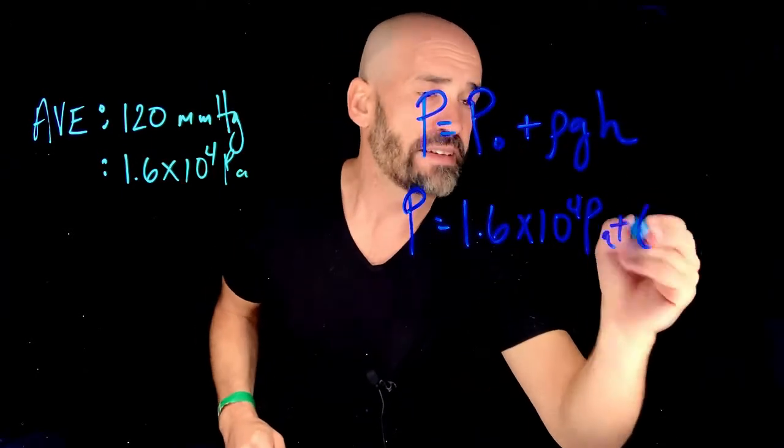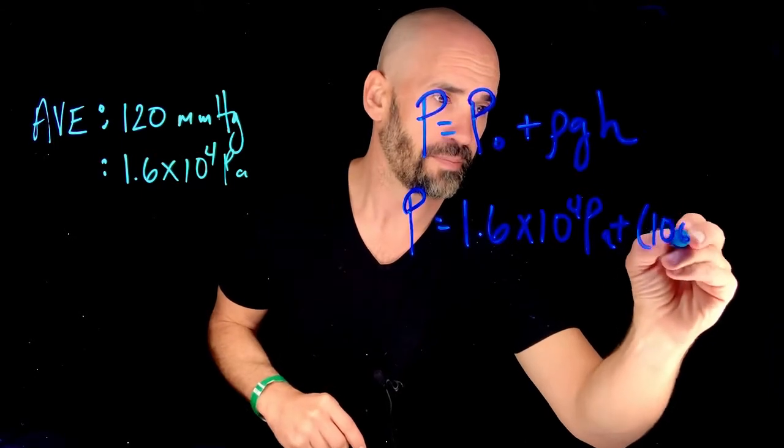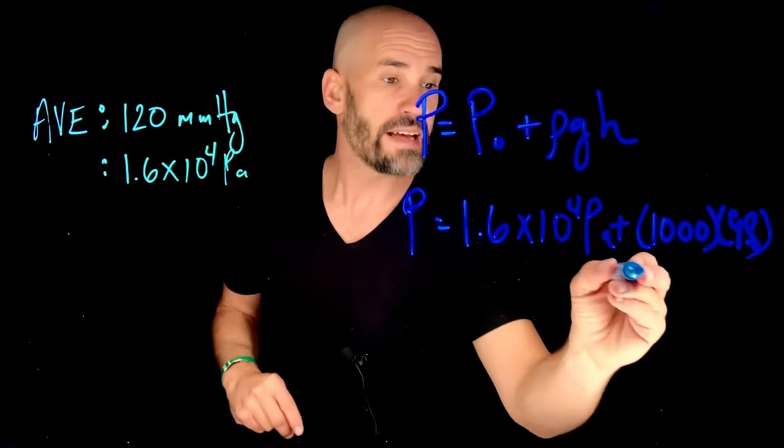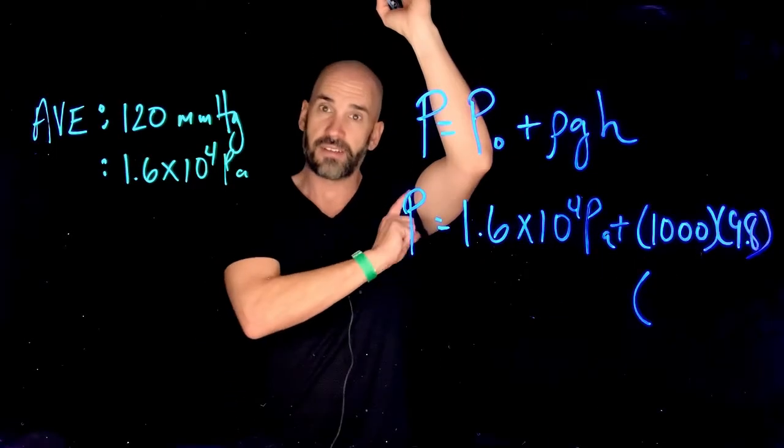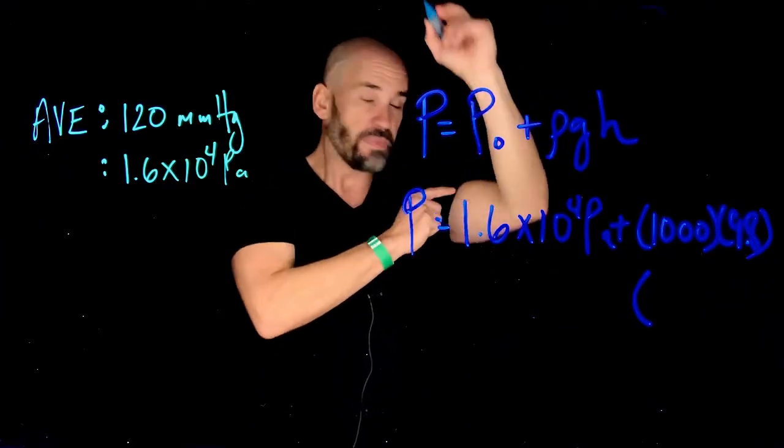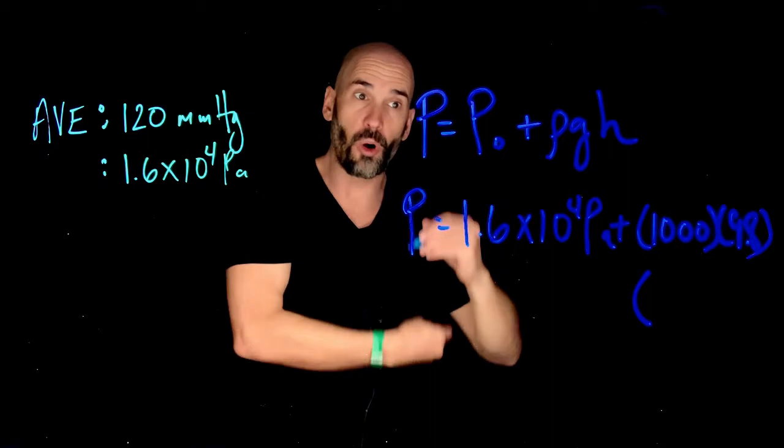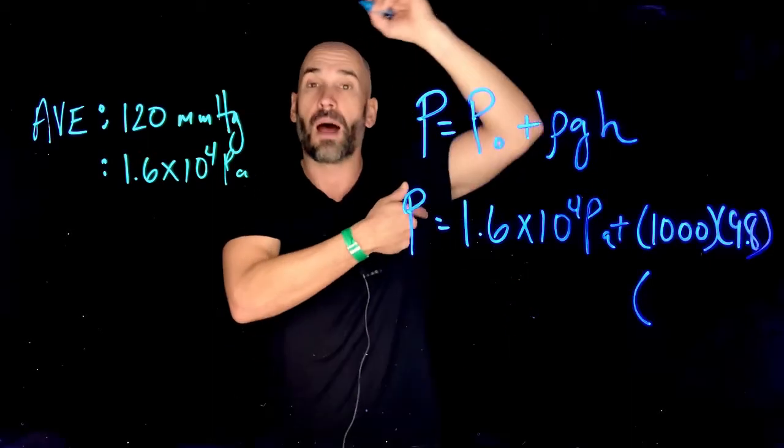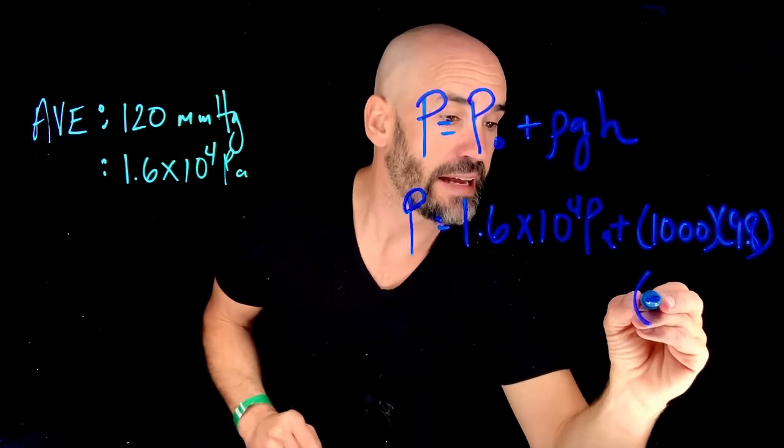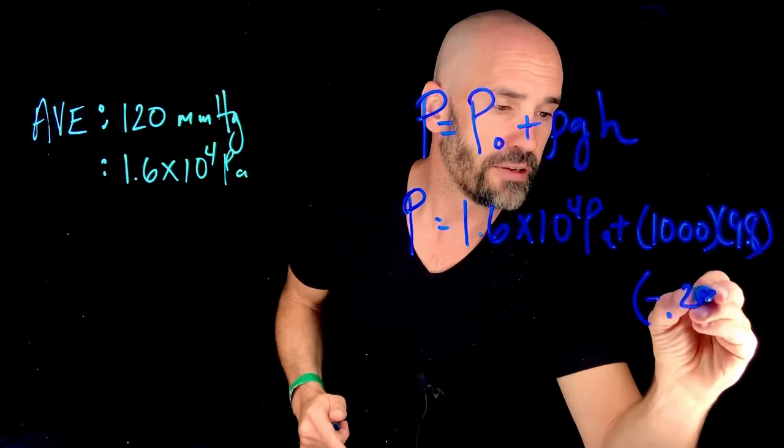So the density of blood, that's the fluid we're dealing with here, is basically 1,000. Times 9.8 meters per second, that's gravity, times the height that you're raising it. However, remember, this H is expecting this to be an increase in depth, so going down. If you're moving up, it's the negative of that. So this is going to be a negative, I said about a quarter of a meter, so negative 0.25 meters.